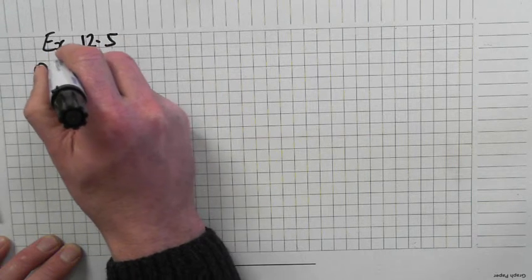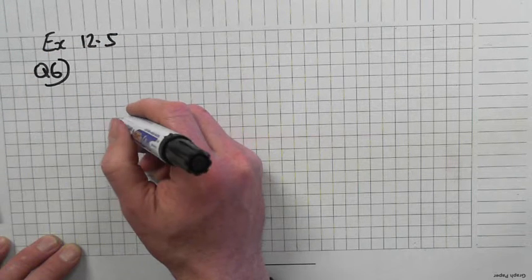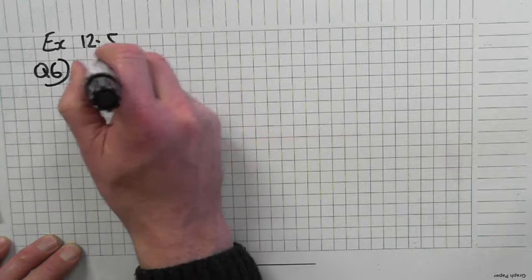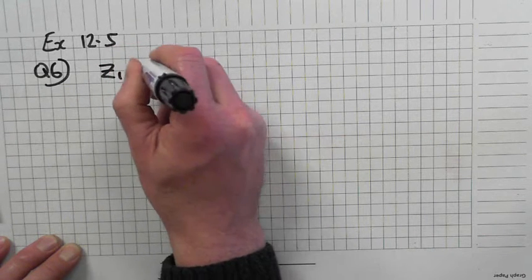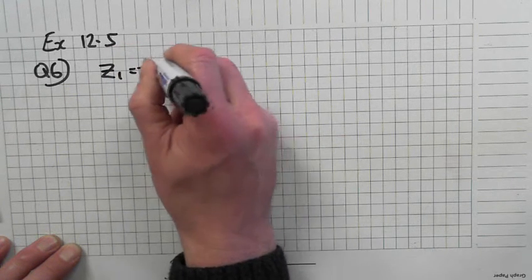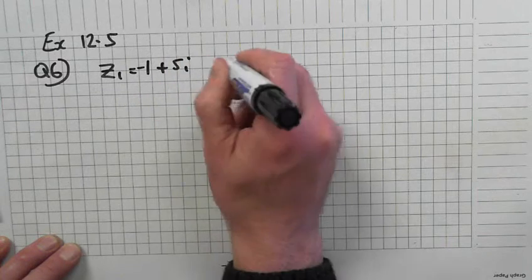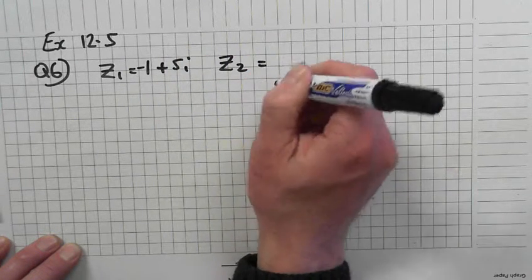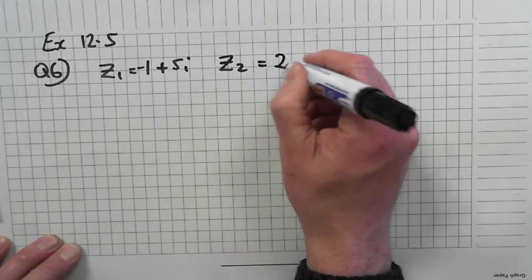12.5, Question 6. Right. So Z1 is minus 1 plus 5i. And Z2? 2 plus 3i.